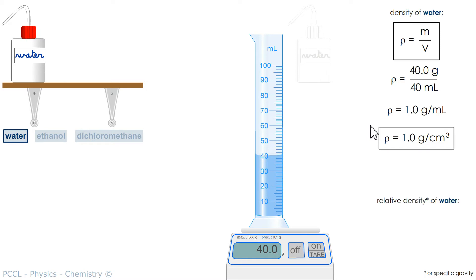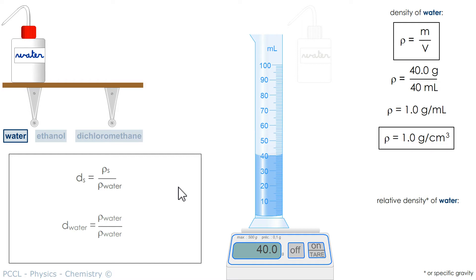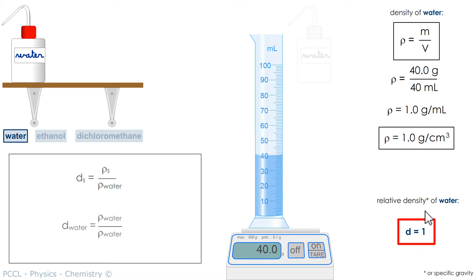So the relative density of water — the relative density of a substance, solid or liquid, is expressed in relation to water. It is the ratio of its density to the density of water, so without units. If we divide two densities, there will be no unit. And for water, it becomes simple, since it is the density divided by itself. Therefore, the relative density is necessarily equal to 1.